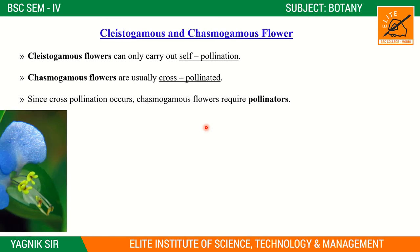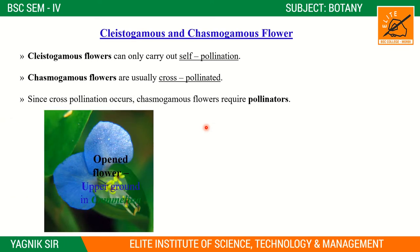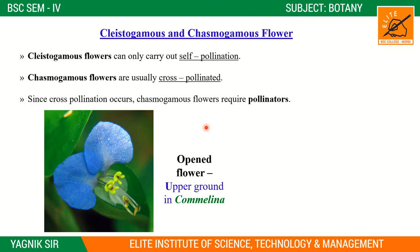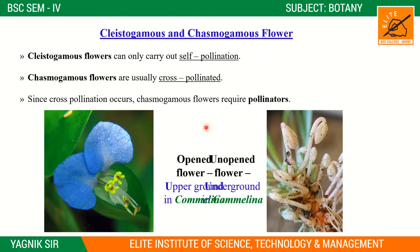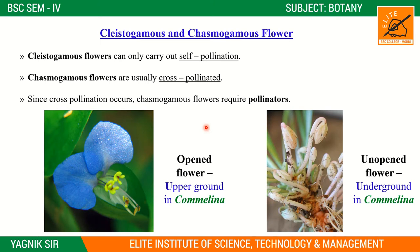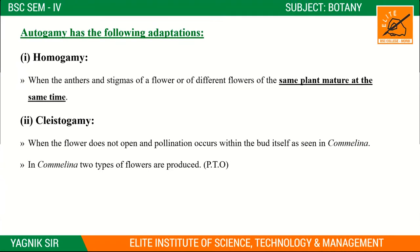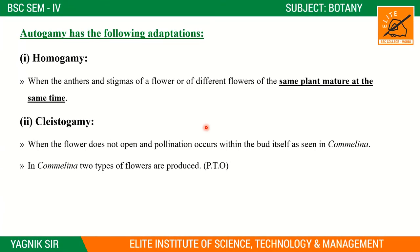Since cross pollination occurs, chasmogamy flowers require pollinators. An example of this is a plant with both underground and surface flowers — the underground flowers are cleistogamous and the surface flowers are chasmogamous.